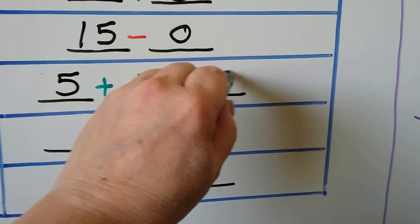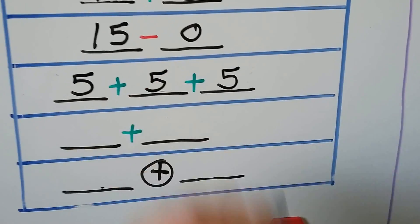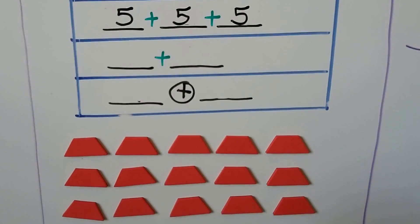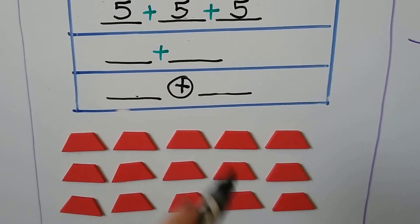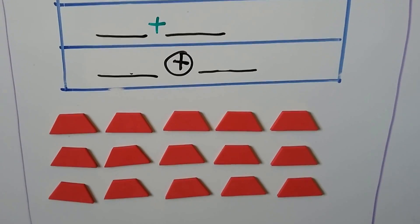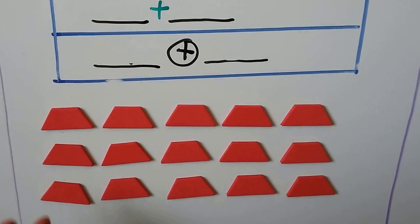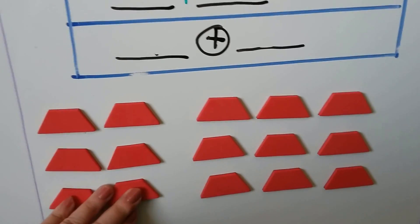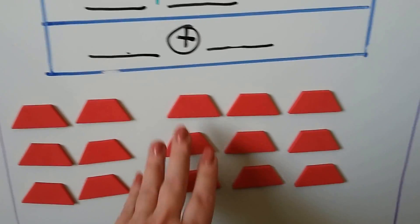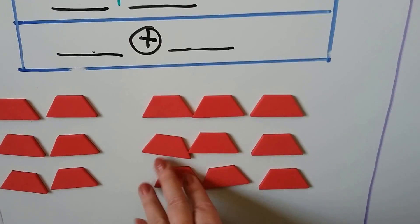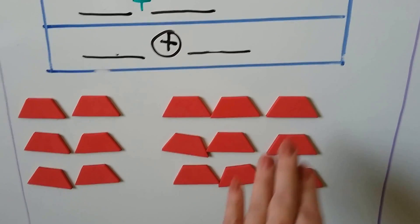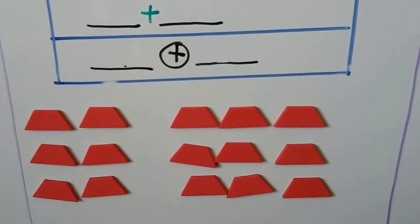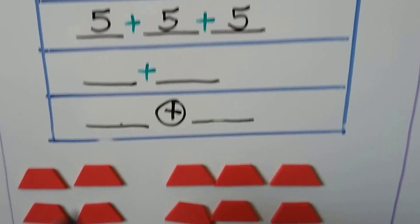We're not taking any counters away or adding any counters to our 15, so we can just move them around. We could say there are 6 counters here and 9 counters here — 6 plus 9 is equal to 15.